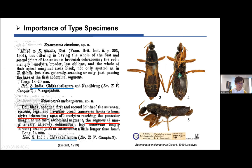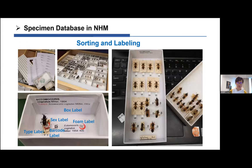This case shows that even the original description is not always right, so we must examine type specimens. Here is what I did to help the curator build a database. First, we sort specimens to group the same species together, then check the original description to confirm if the specimen is a type and determine its type status.